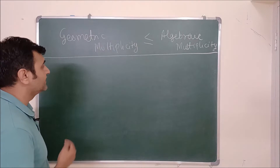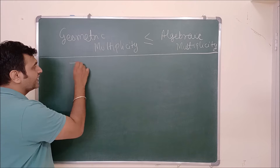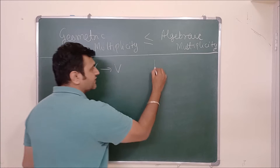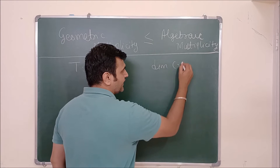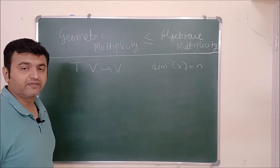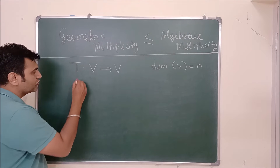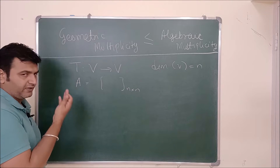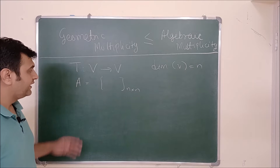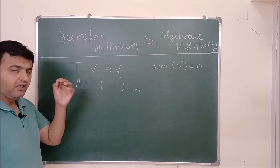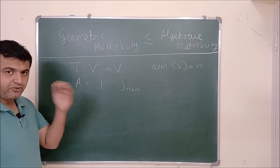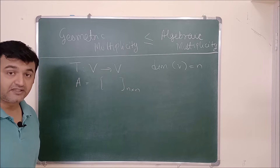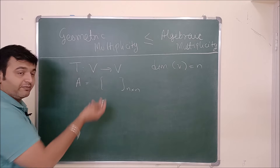Suppose T is a linear map from one vector space to the vector space V, where V is a vector space of dimension n. That means the basis will have n elements. You can also consider a matrix A of order n×n. Either a matrix will be given to you, or if a linear transformation is given, you take a basis and with respect to that basis you form the matrix.